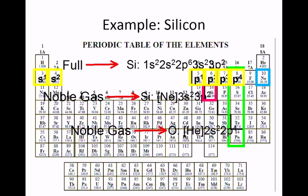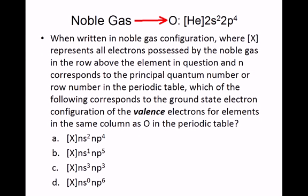Every element in the same group as oxygen possesses two s and four p electrons. The only thing that changes is the identity of the noble gas and the value of the principal quantum number. Therefore, the correct answer is choice a.